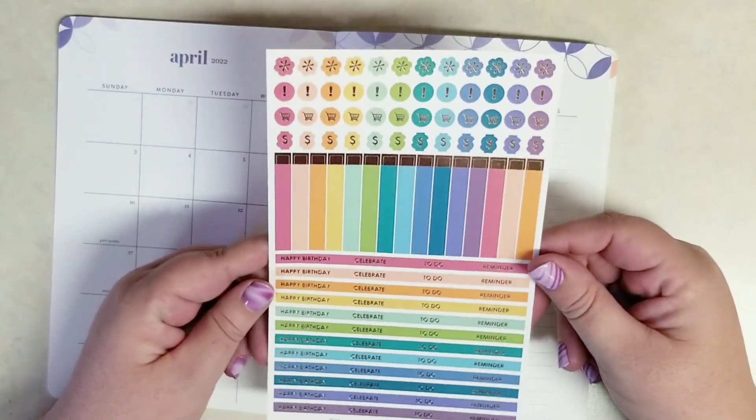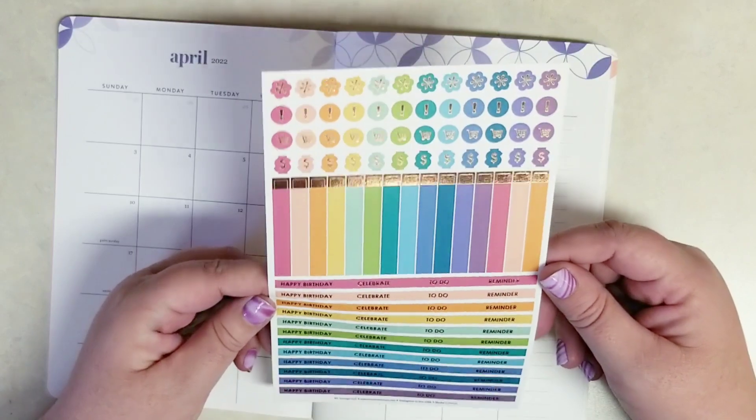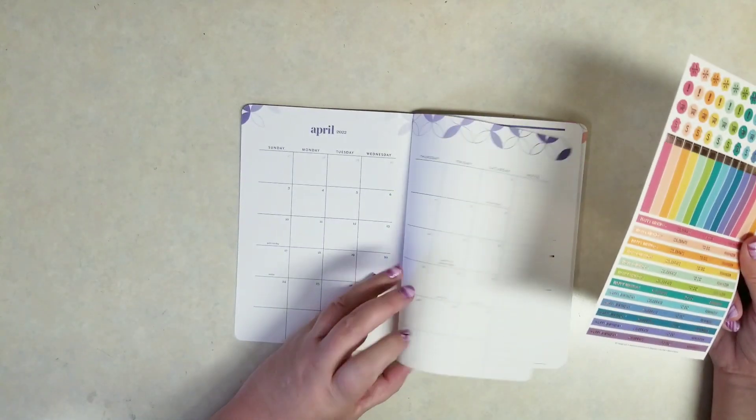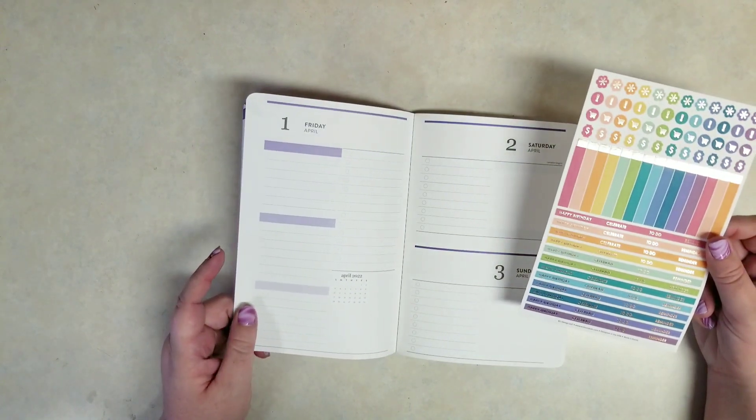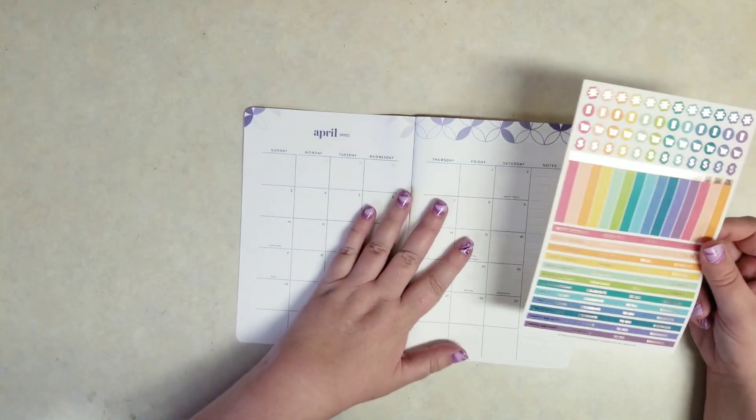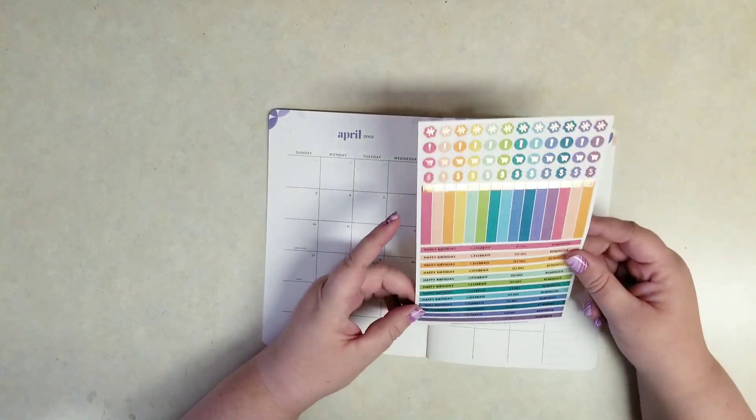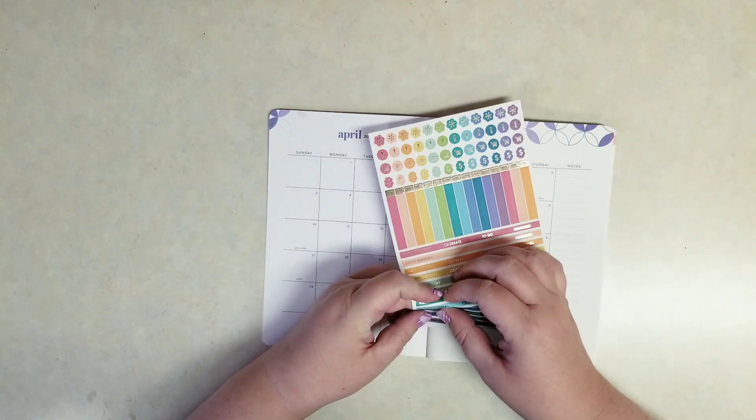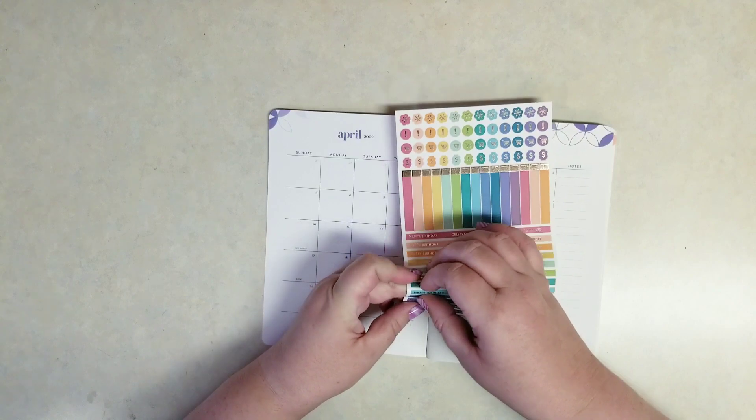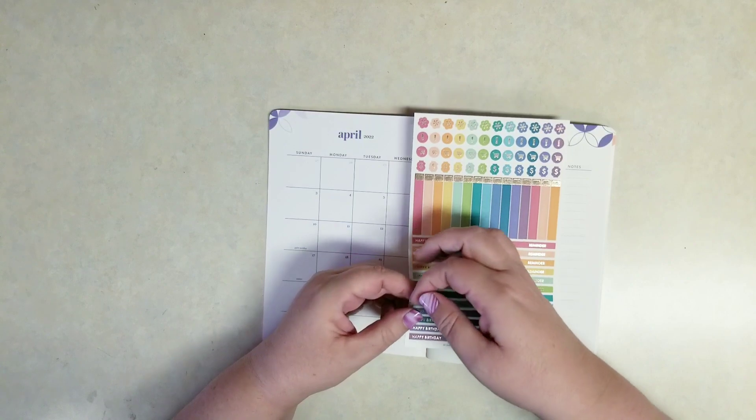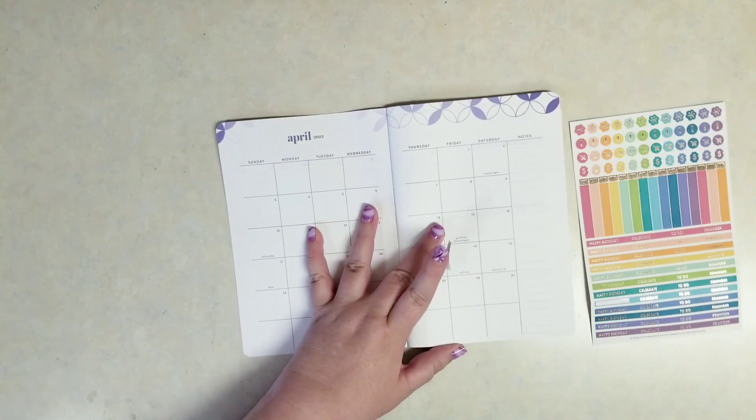So I do have a family member's birthday. And in this sheet you get these really cute asterisk stickers, you get kind of bullet points, some flags, and then you get birthdays, celebrate, to do. So I think we can take a little birthday flag and put it on the second there.